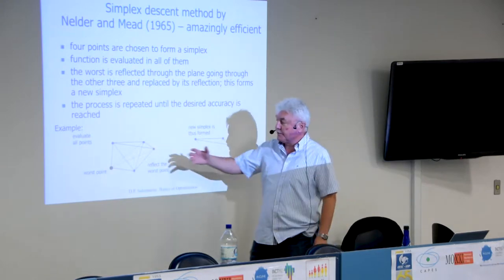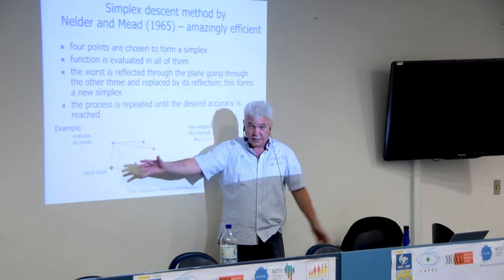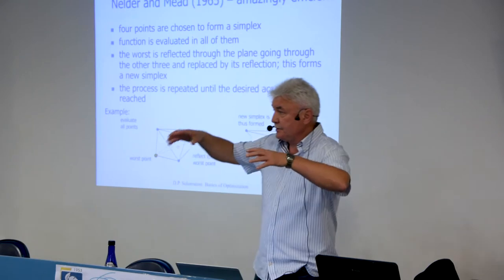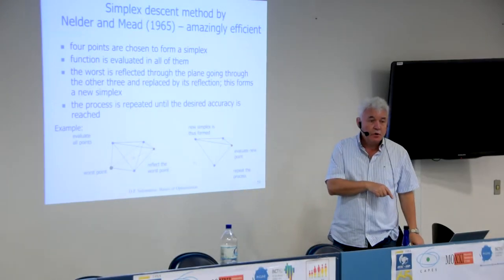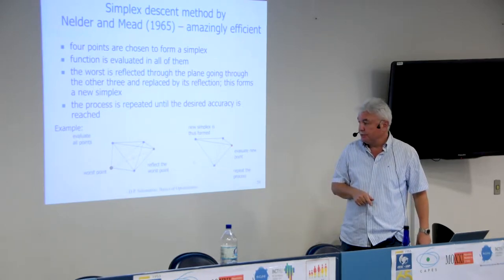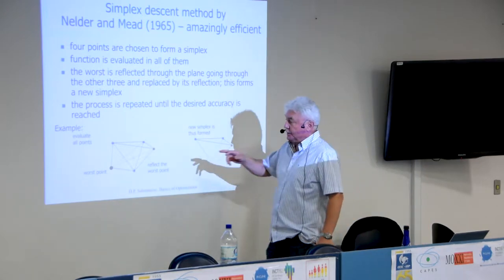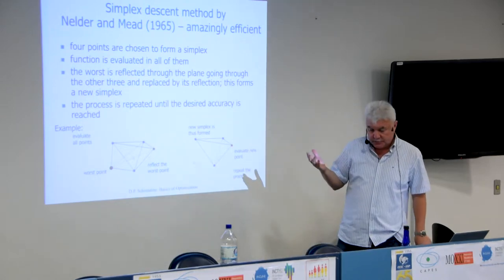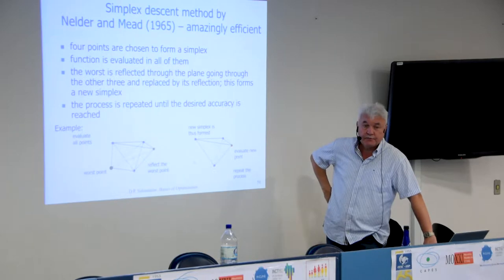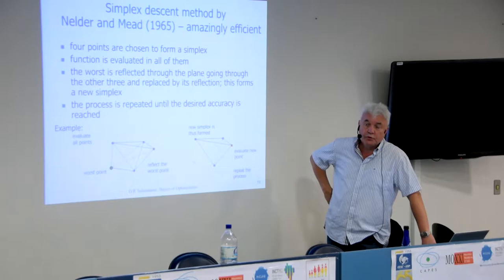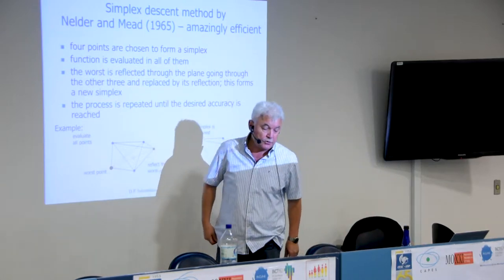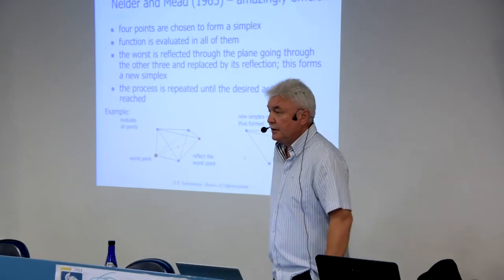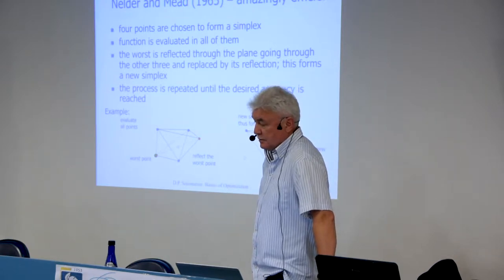A variation is to generate several simplexes randomly in the space and perform a multi-start search. Each simplex rolls down independently toward the minimum. This multi-start approach is implemented in the GLOBE software as the 'multiple simplex' or 'm-simplex' algorithm. The speaker implemented this around 1995.